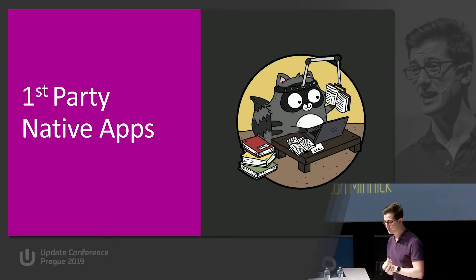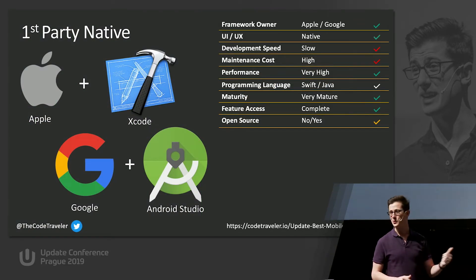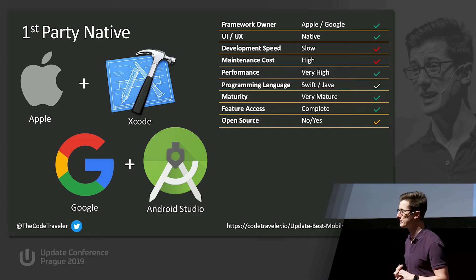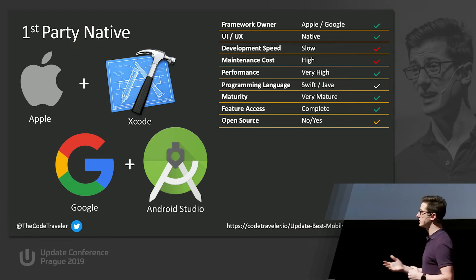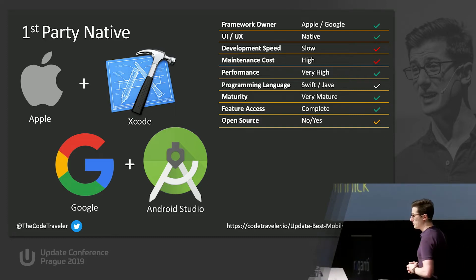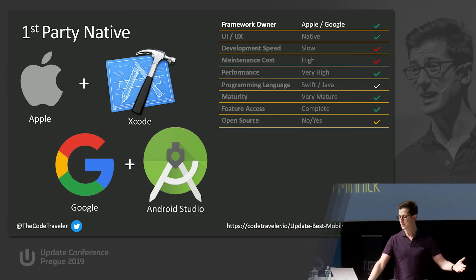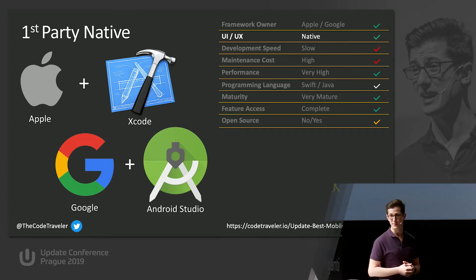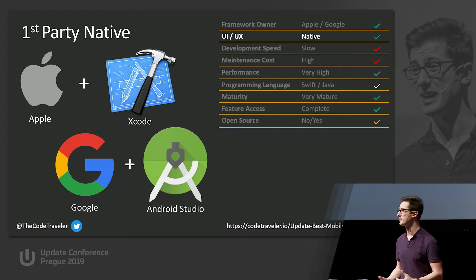Jumping into it — we're going to start with what we call first-party native apps. These are the ones made by Apple and Google. If you're making an iOS app, you'll be using Apple's development tool, Xcode. Google provides their own called Android Studio. Since these are owned and created by Apple and Google, you don't really have that third-party risk. As long as Apple creates iOS and Google creates Android, they're going to continue creating their development tools.